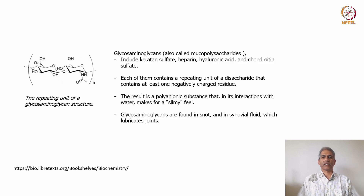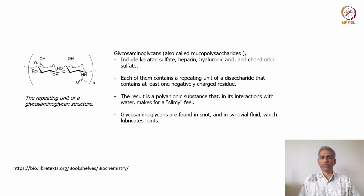Another class of polysaccharides are called glycosaminoglycans (GAGs). Their repeating structure has a charged group in the form of NHO, which allows them to bind a lot of water molecules, giving them a very slimy feel. GAGs are found in mucus and in synovial fluid where they are used for lubrication of joints. Well-known GAGs include keratin sulfate, heparin, hyaluronic acid, and chondroitin sulfate. Some of these are sold as supplements for people with arthritis.